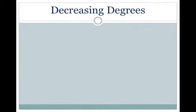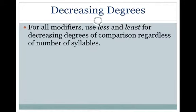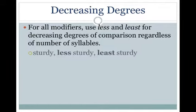Decreasing degrees: for all modifiers, use less and least for decreasing degrees of comparison, regardless of number of syllables. For example: sturdy, less sturdy, least sturdy.